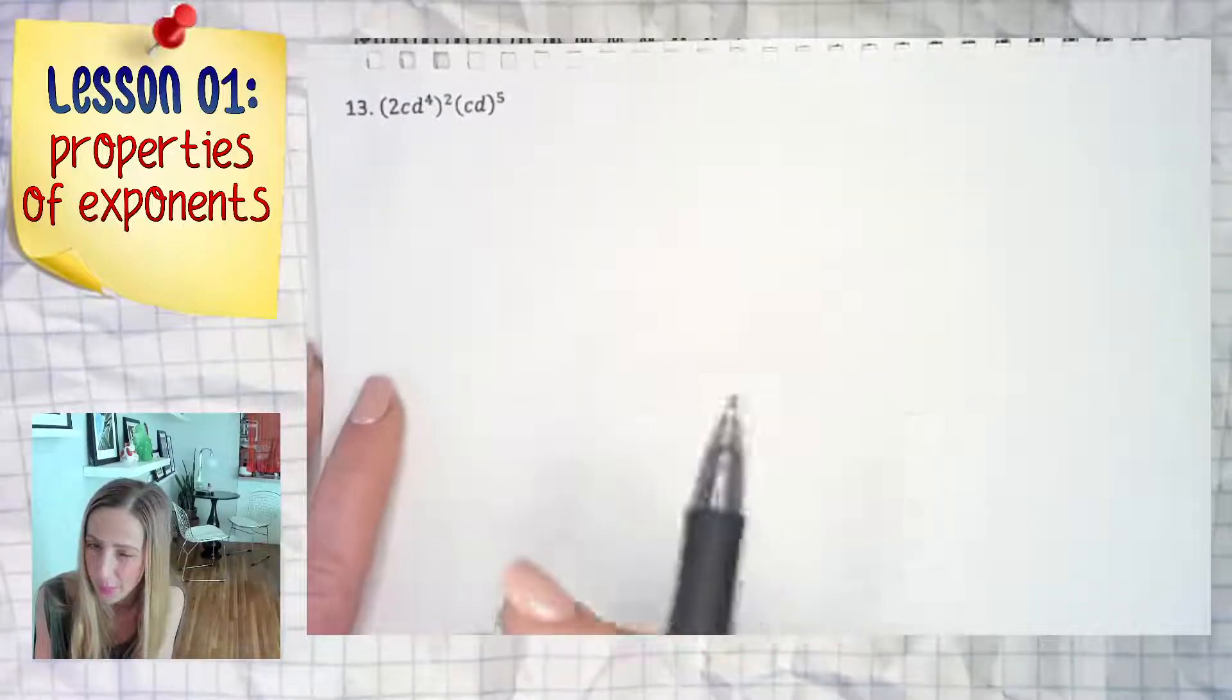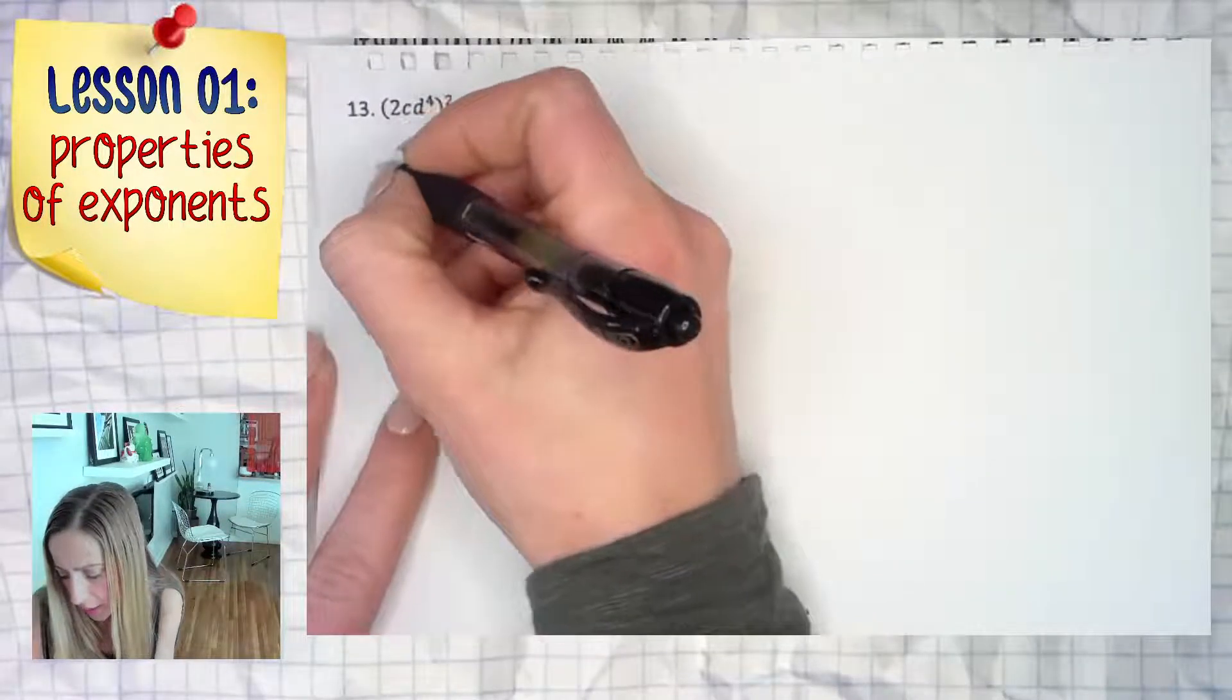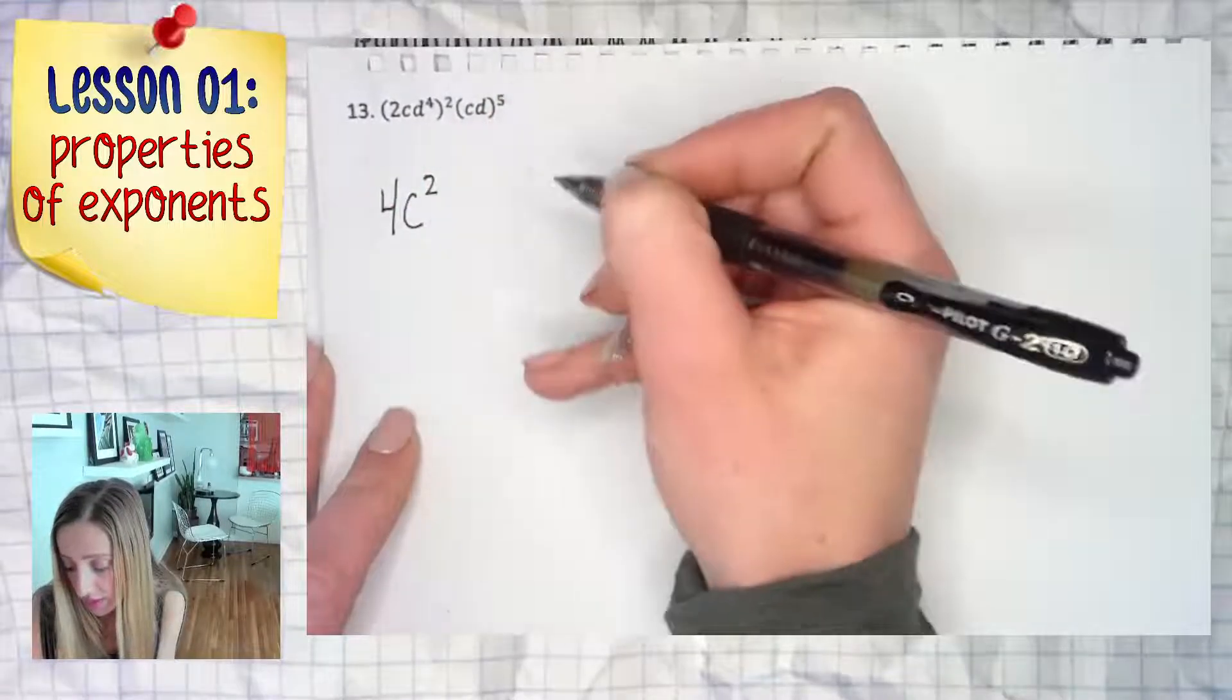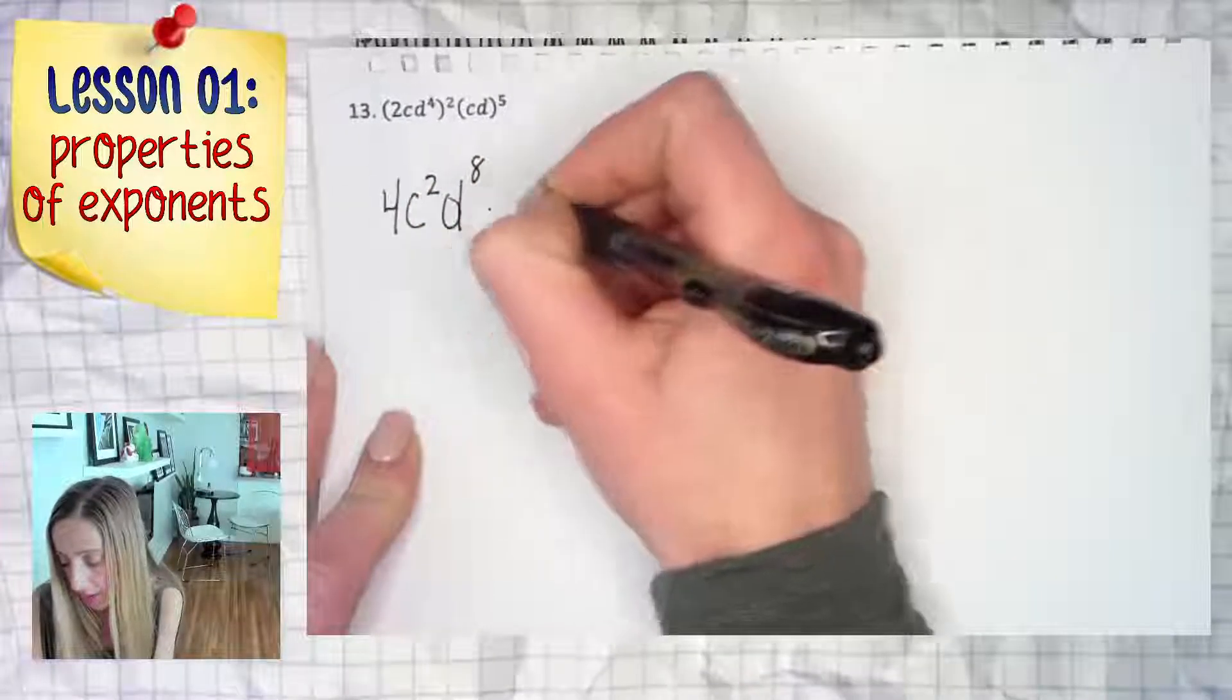If you're doing something like this example, I would deal with 2 to the second power - that becomes 4. C also becomes c to the second power. D to the fourth gets raised to the second, becomes that right there. And we still have c and d both being raised to the fifth.